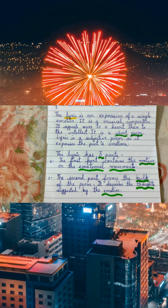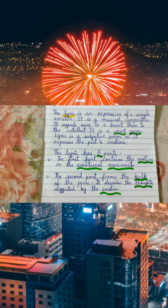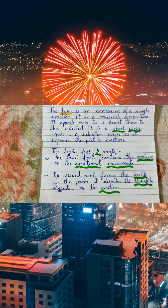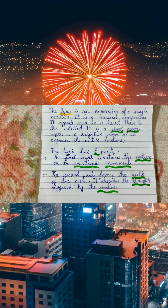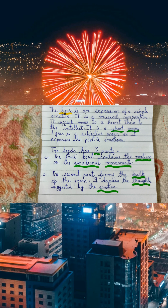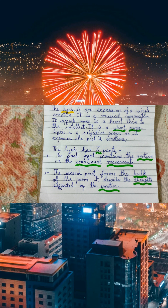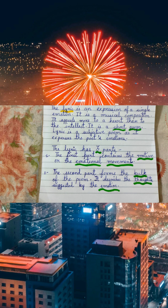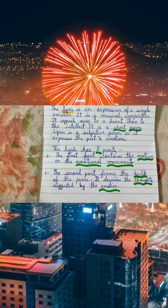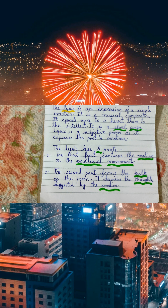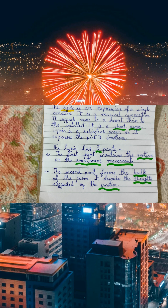Now, the lyric has three parts. The first part contains the motive or the emotional movement. The second part forms the bulk of the poem — it describes the thoughts suggested by the emotion.